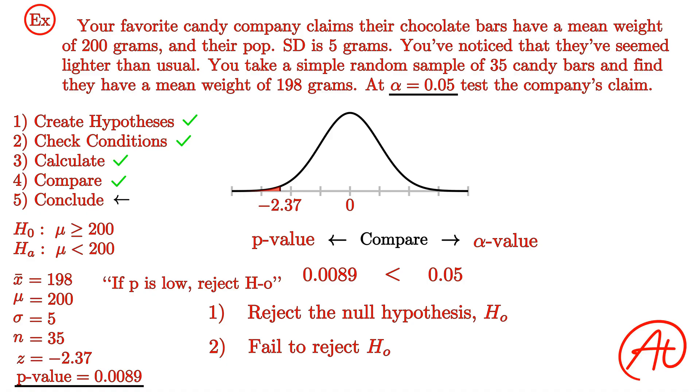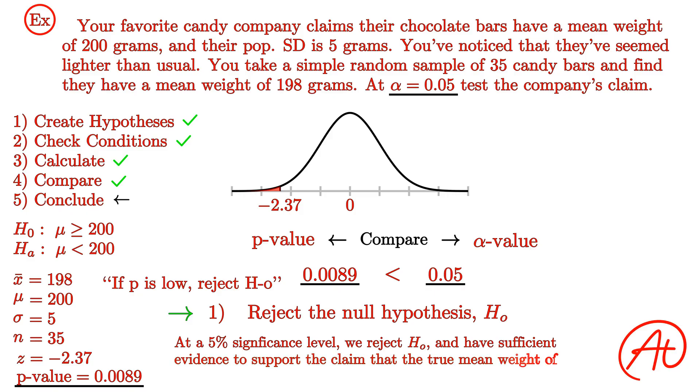If the p-value is greater than the alpha value, we would fail to reject the null hypothesis. For our example, the p-value of 0.0089 was less than our alpha value of 0.05, so we would reject our null hypothesis. To put this in context of the problem, we could say at a 5% significance level, we reject the null hypothesis and have sufficient evidence to support the claim that the true mean weight of chocolate bars sold by the company is actually less than 200 grams.